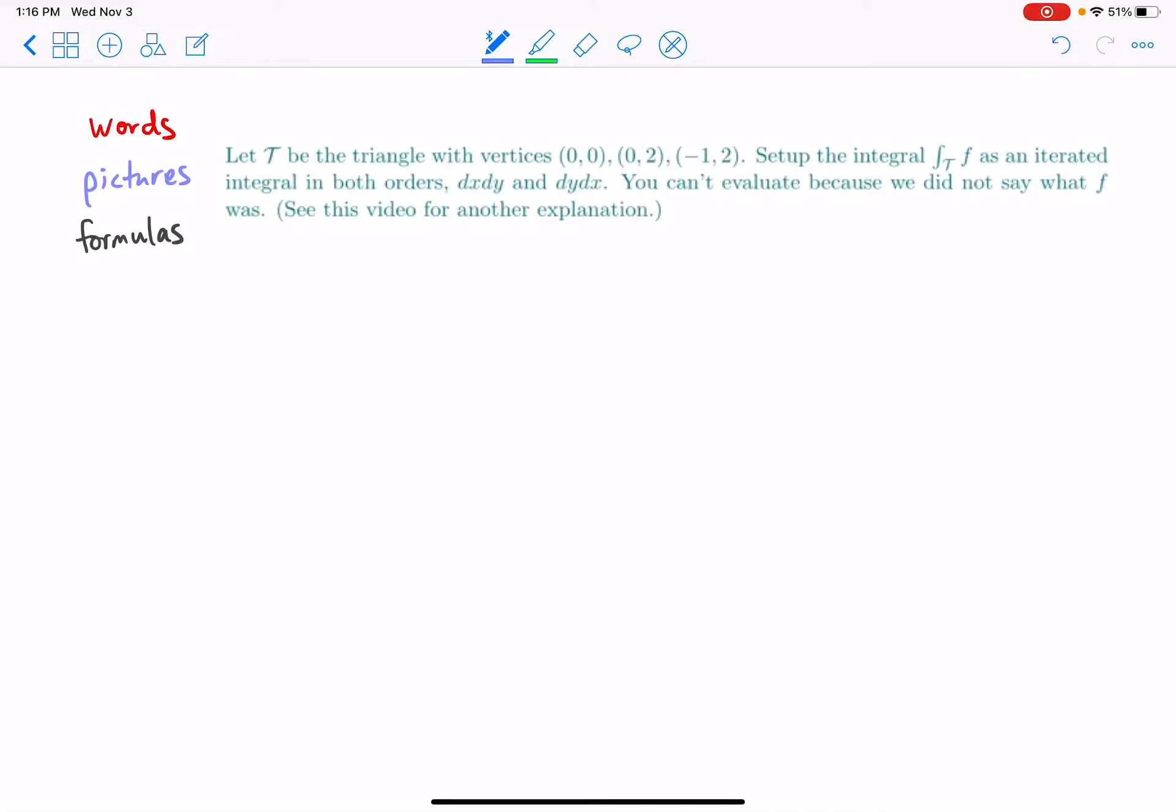Okay, hi everybody. So we've got our familiar triangle, and so let's just draw it first. There's (0,2), here's (0,0), then over at (-1,2) we have our triangle.